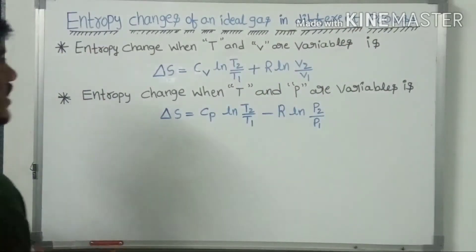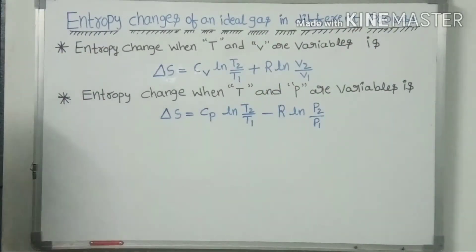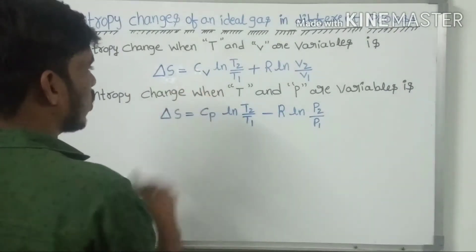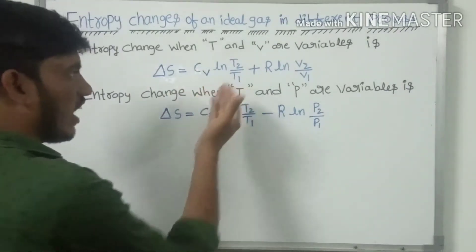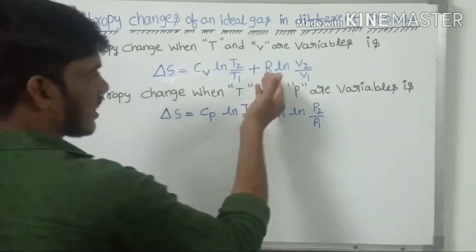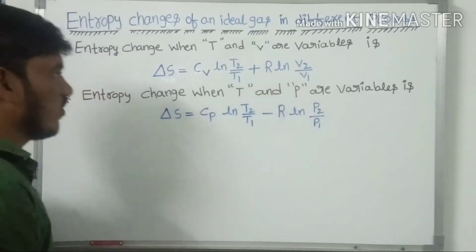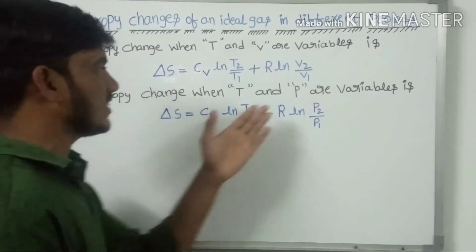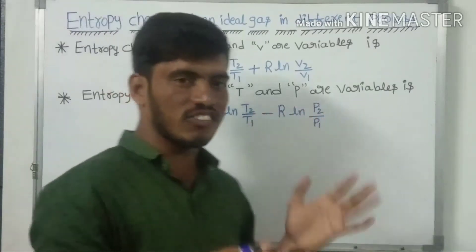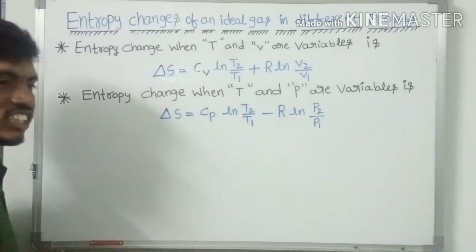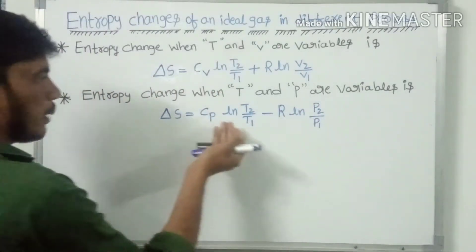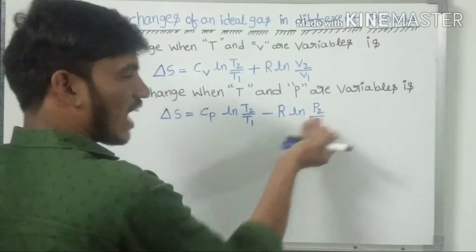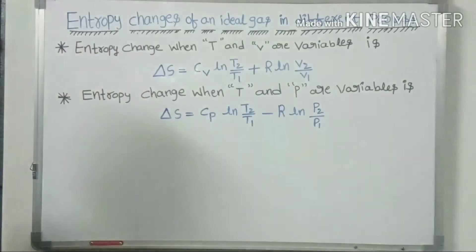Entropy change when temperature and volume are variables is: delta S is equal to Cv ln(T2/T1) plus R ln(V2/V1). Another one is entropy change when temperature and pressure are variables: delta S is equal to Cp ln(T2/T1) minus R ln(P2/P1).